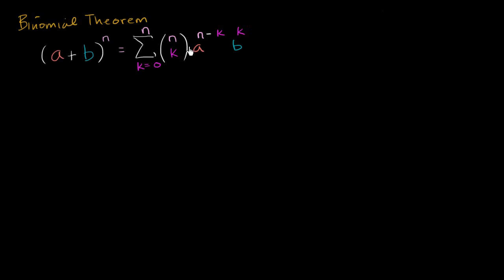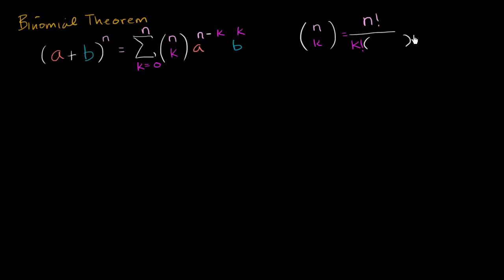Let's review what n-choose-k actually means. n-choose-k, from combinatorics, equals n factorial over k factorial times n minus k factorial. Now let's apply it to what started to intimidate us: a plus b to the fourth power.